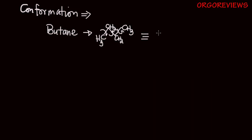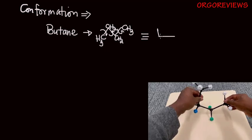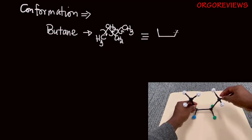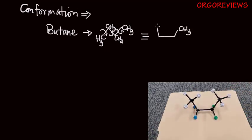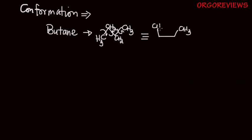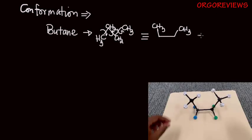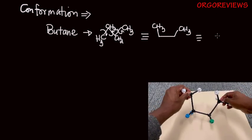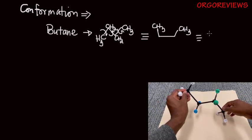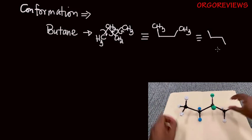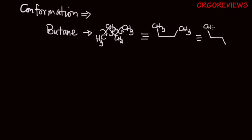Every time you rotate these bonds, the molecules are going to assume a different conformation. For instance, you're going to have a structure where the methyl groups are both facing up, and structures in which one is facing up and the other one is facing down. All of these are different conformations, and this single bond can also rotate as well.